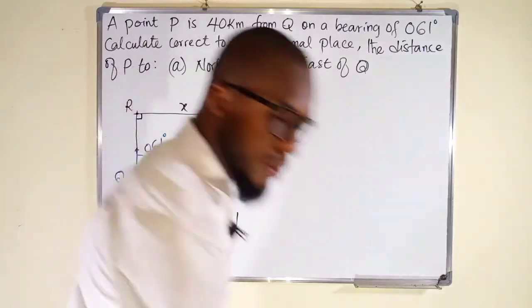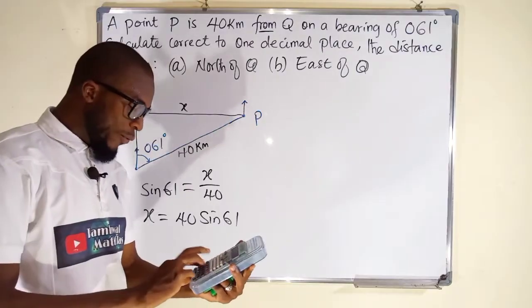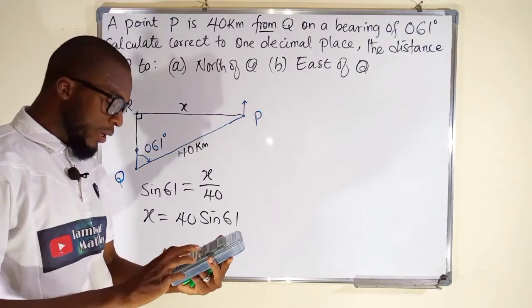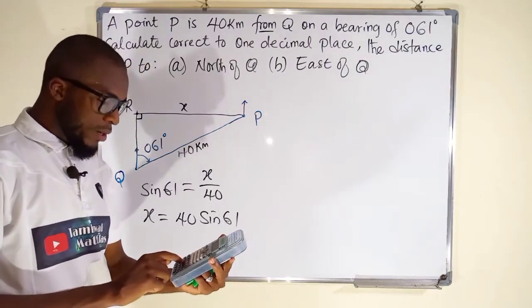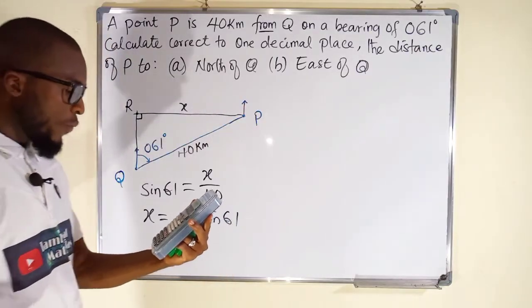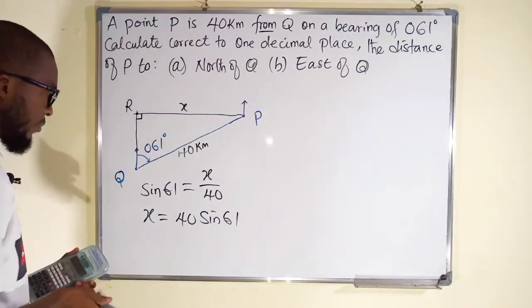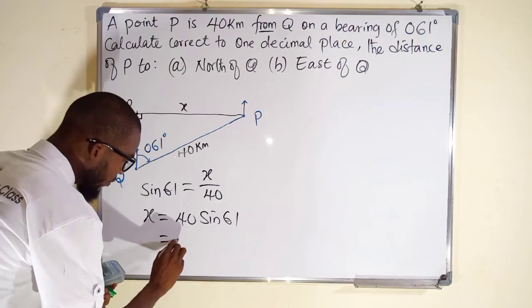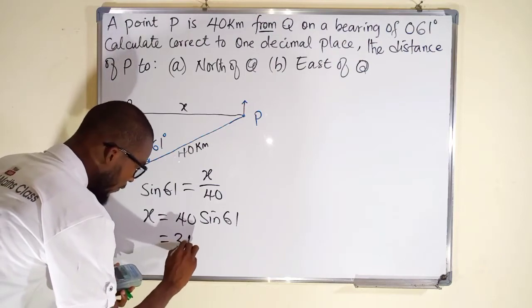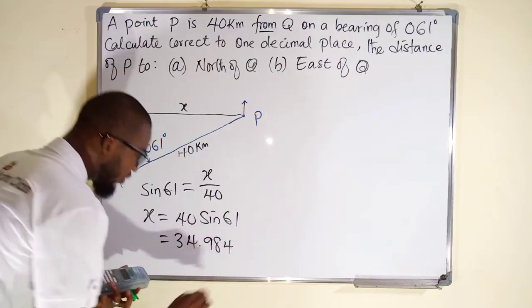If we make X the subject, we're going to obtain something like this. X is equal to 40. Multiply both sides by 40. 40 sine 61. So let me use my calculator. From your calculator, just press 40, then multiply by, press sine, 61. What we have here is 34.98. This is equal to 34.984.